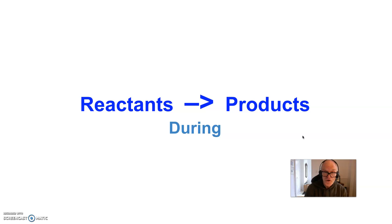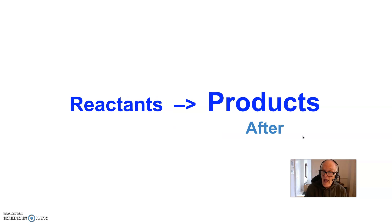The yields are during the reaction. The reactants are turning into the products, so there's some of each there. And after the reaction is over, what we have left are the products.